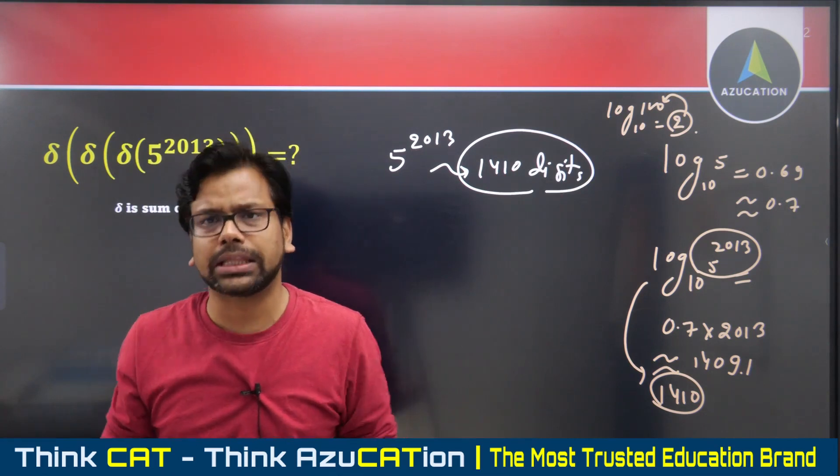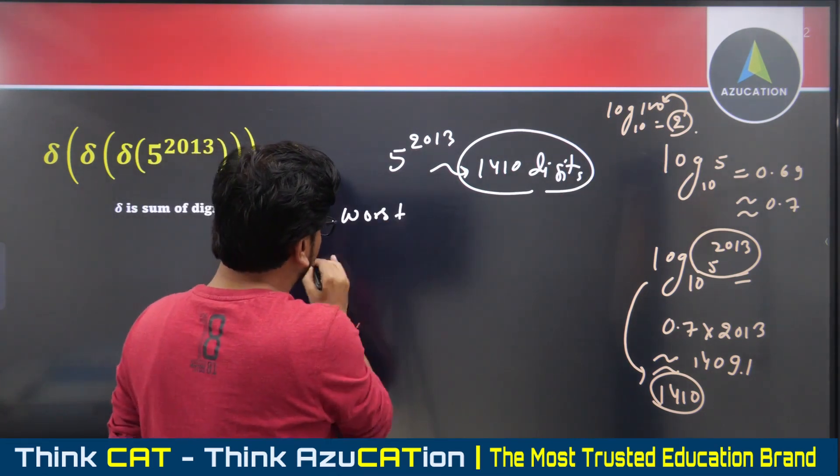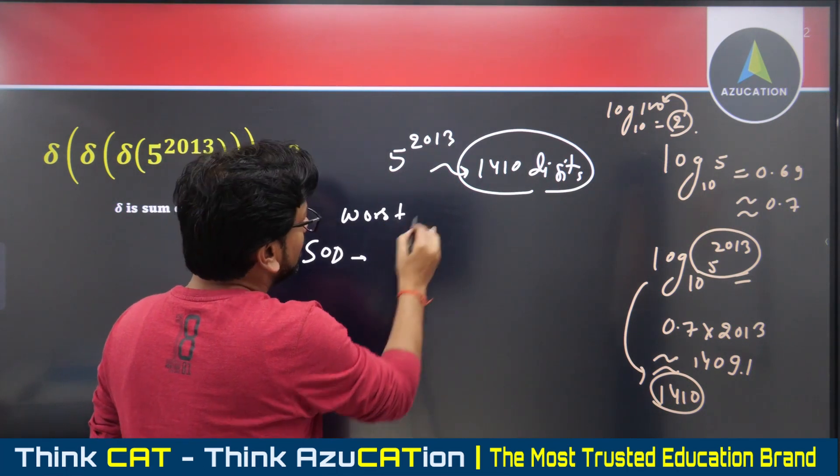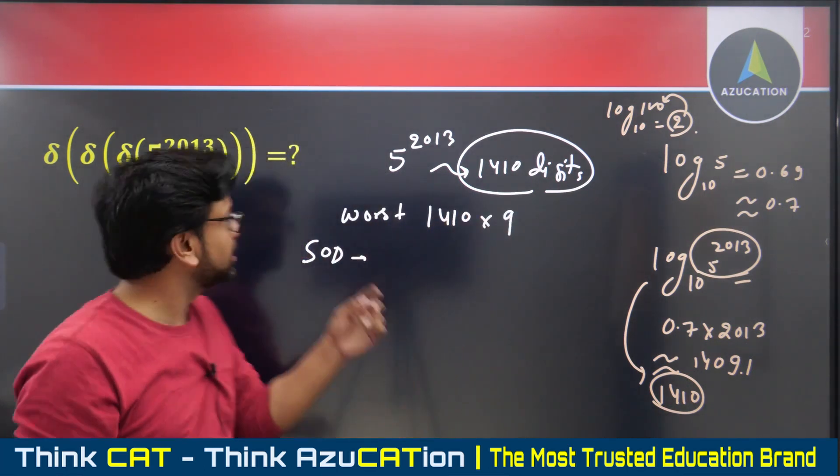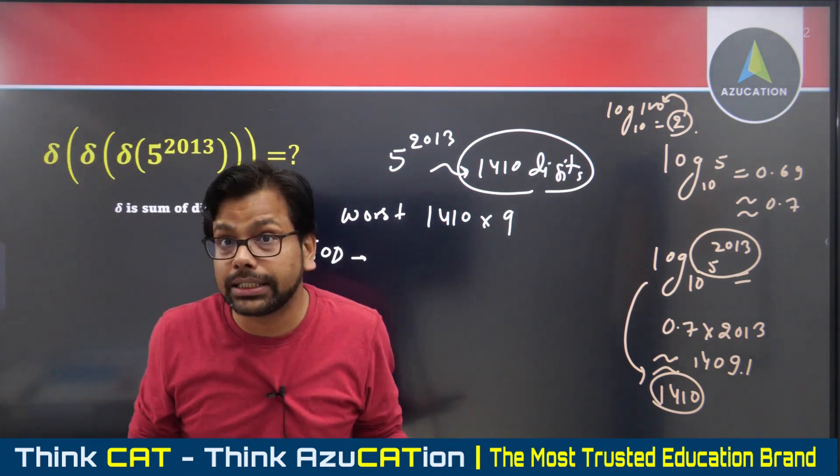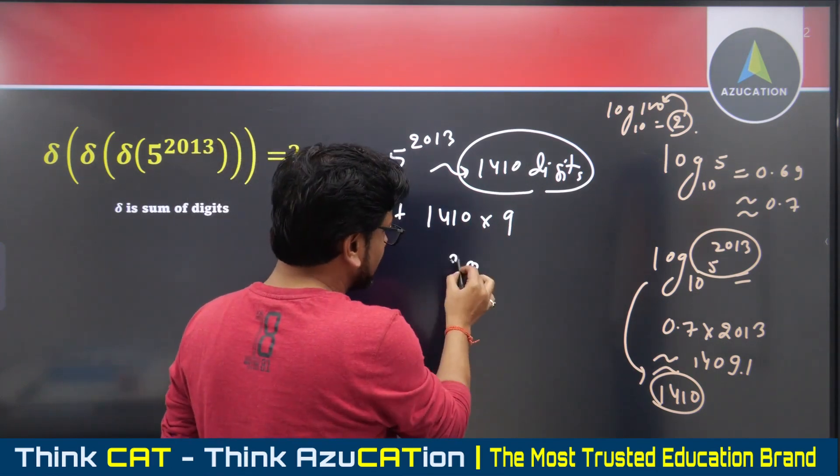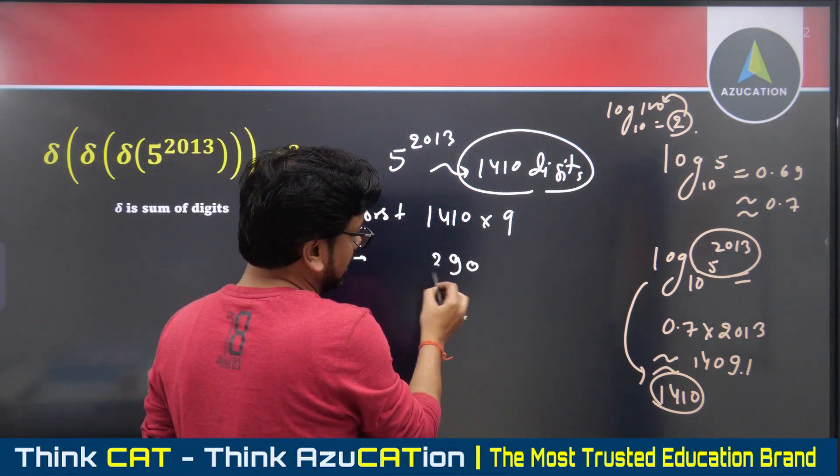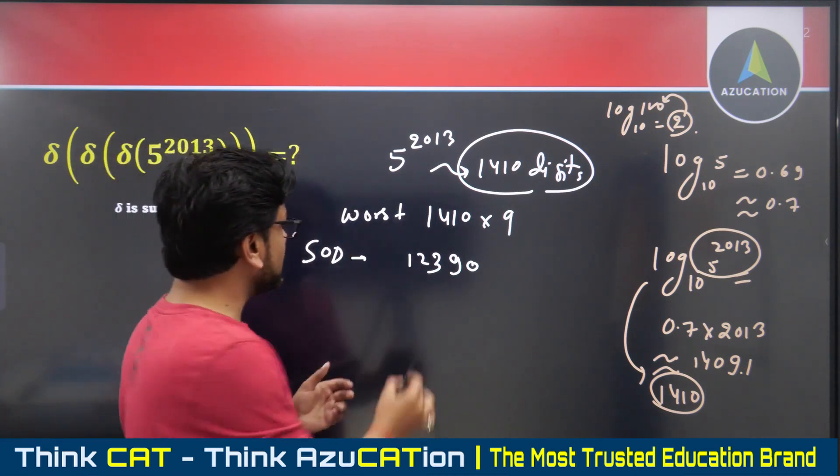In the worst scenario, what is the maximum sum of digits? In the worst case, if I find the first sum of digits, assume all 1410 digits are nines, which is not possible because one digit must be five. But let's say worst case, all are nines.